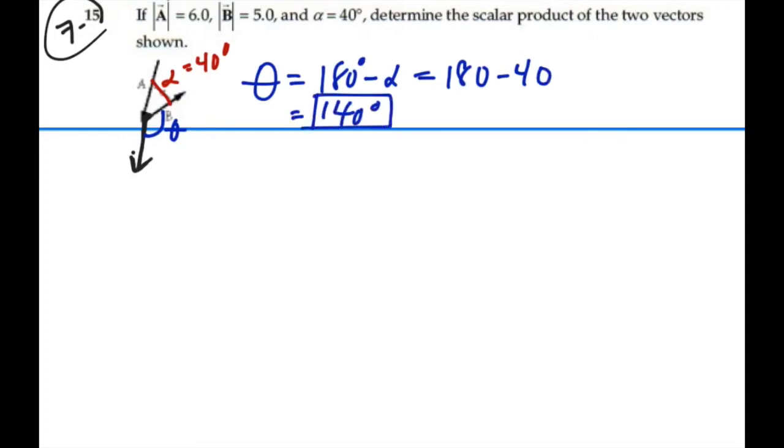So that's the theta we want for this dot product. We're given the magnitude of A and the magnitude of B. So A dot B is AB cosine theta, theta being the angle between the two vectors.